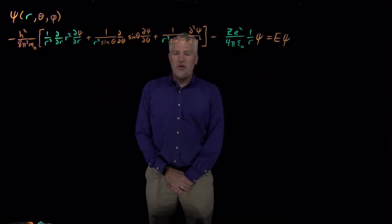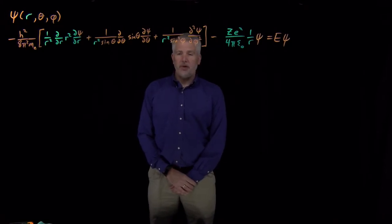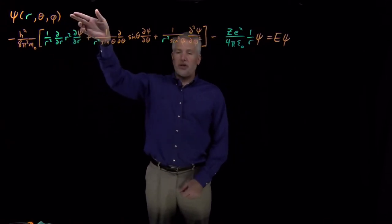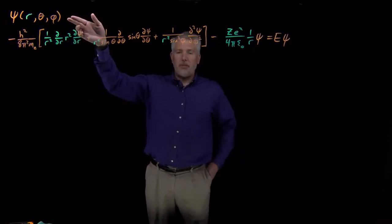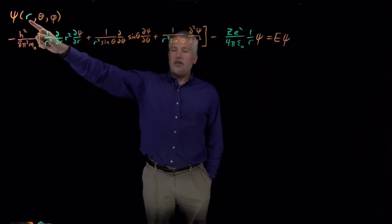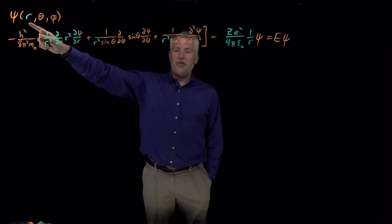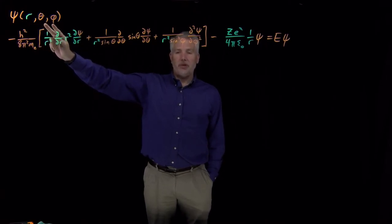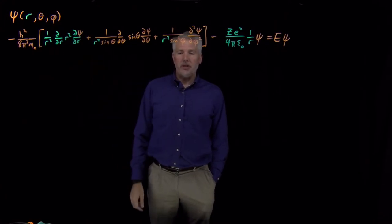We're talking about the hydrogen atom — solving the Schrödinger equation for the hydrogen atom. The wave function we're trying to solve is a three-dimensional wave function that depends on the radial position of the electron, its distance away from the nucleus, and also two angular variables that describe the angular position of the electron with respect to the nucleus.